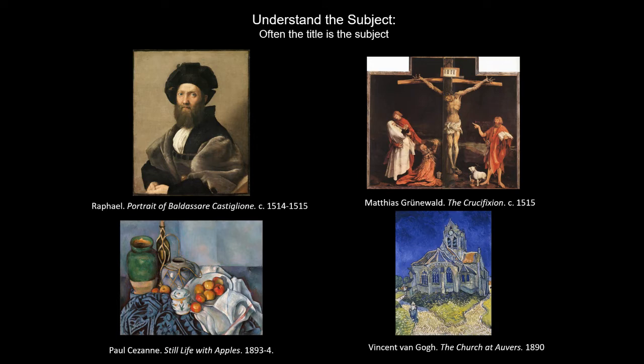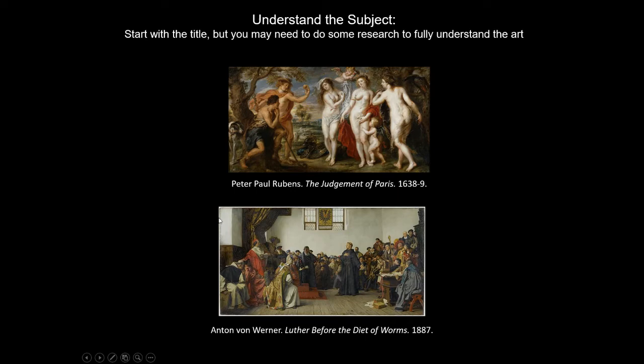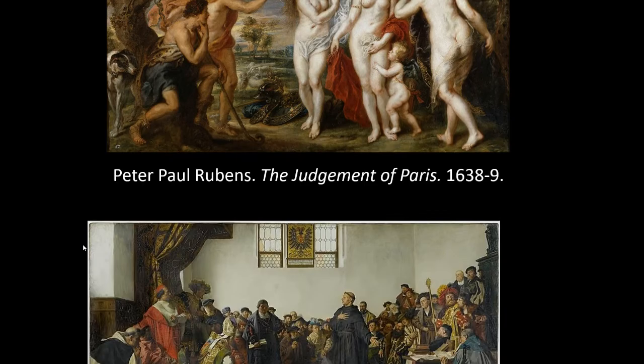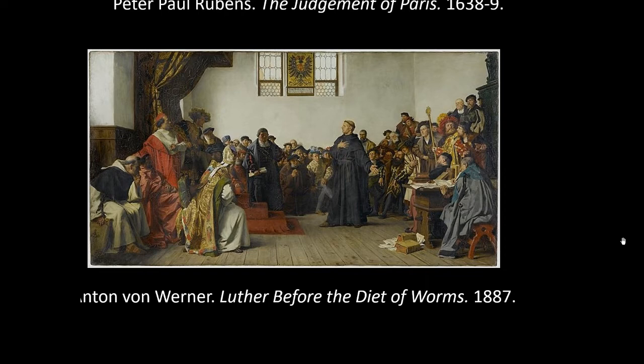Sometimes even when the title gives us a subject, you might still need to look things up. Let's look at this piece by Peter Paul Rubens. The title is The Judgment of Paris. When you hear 'Paris' you probably think of the city in France, but that's not what this painting is about — Paris is a person, and 'the judgment' means he is judging a kind of beauty contest between three women. The Judgment of Paris has nothing to do with the city in France; you would have to look that up to understand the story.